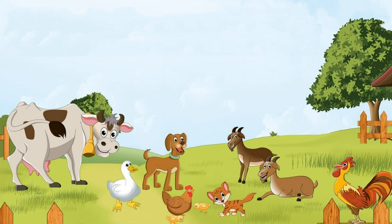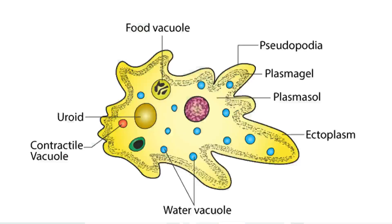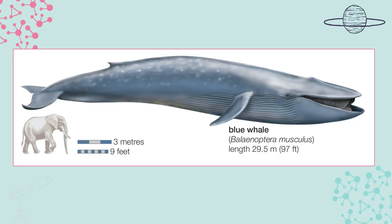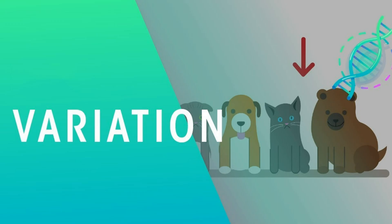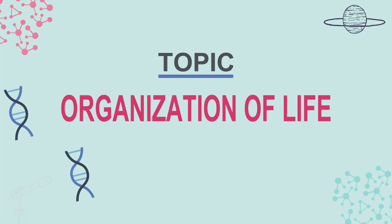If you look around your area, you will be able to observe numerous varieties of animals. Among them, there are animals like amoeba which cannot be seen by our naked eye, and animals like blue whale and elephants which are of huge size. There is some variation between animals — why this variation? That is what we are going to learn today. Today's topic is Organization of Life.